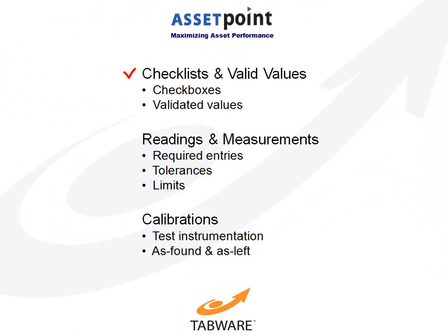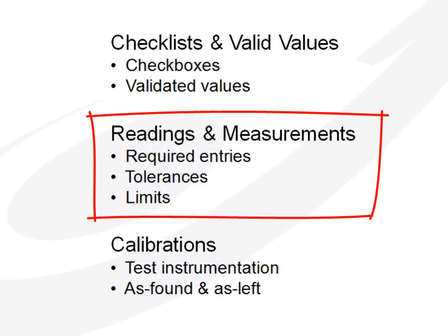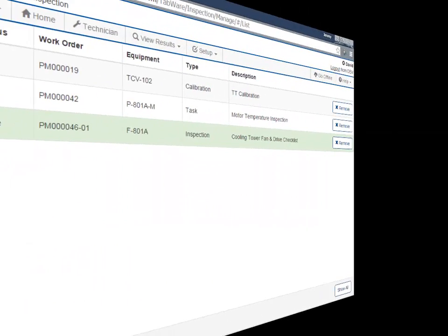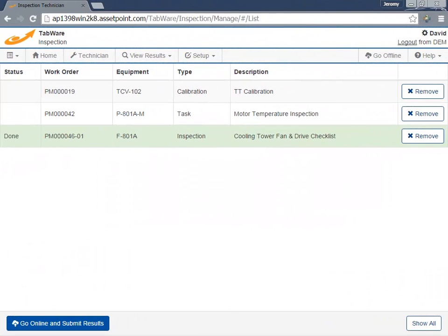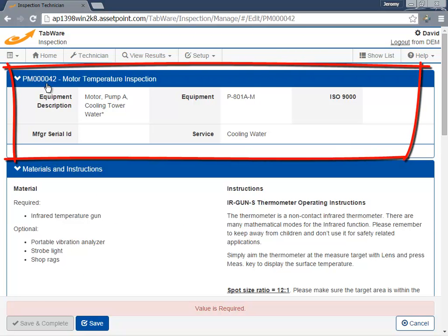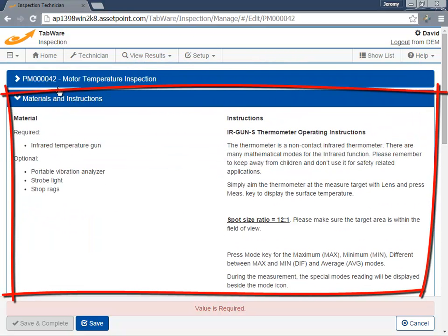Scenario 1 called for basic checklist needs. Scenario 2: for this next inspection, we'll assume we have more complex needs. As before, we begin by reviewing equipment details and any required materials and instructions.